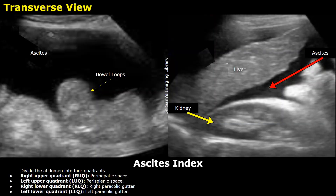Hello everyone, this is Dr. Sam and today you will learn how to measure the Ascites index on ultrasound. Ascites is the abnormal accumulation of peritoneal fluid in the abdominal cavity. This excess fluid usually appears anechoic on ultrasound. We can measure the severity of the Ascites on ultrasound, and the Ascites index is helpful in measuring the severity of the fluid accumulation.